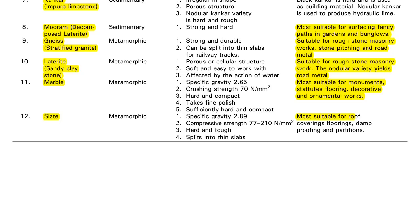Slate is also very important. It is classified under the category of metamorphic rock. Its specific gravity is 2.89 and its compressive strength is 77 to 210 Newton per mm square. Slate is most suitable for roof coverings, floorings, damp proofing, and partitions. Marble is most suitable for static flooring, while slate is most suitable for roof coverings, floorings, damp proofing, and partitions.